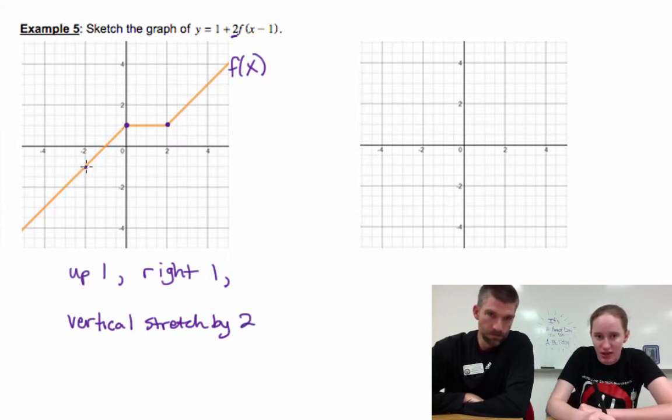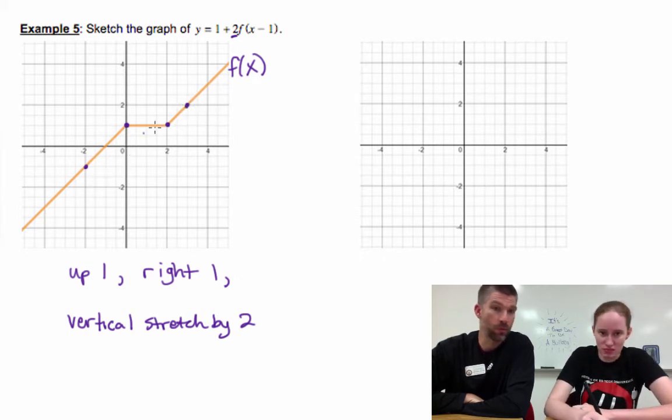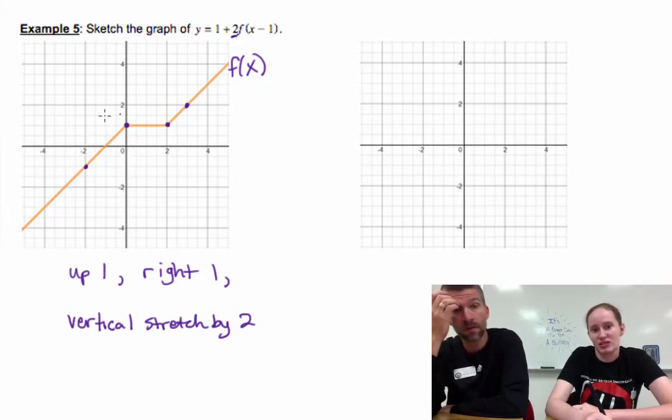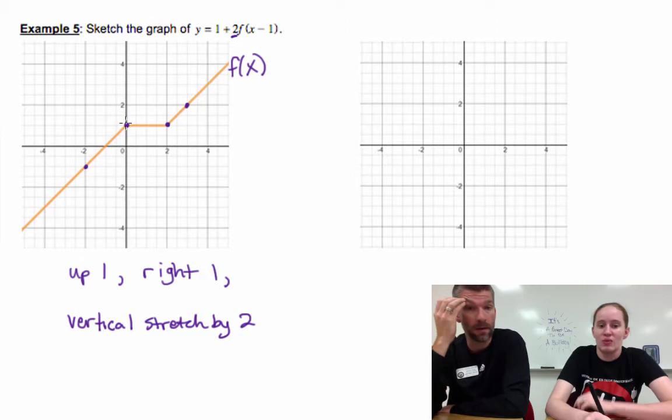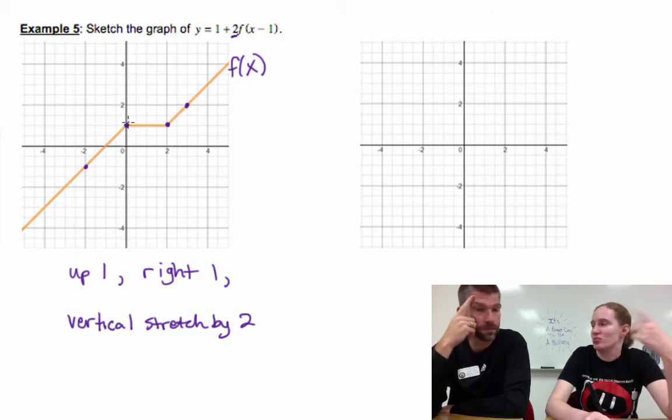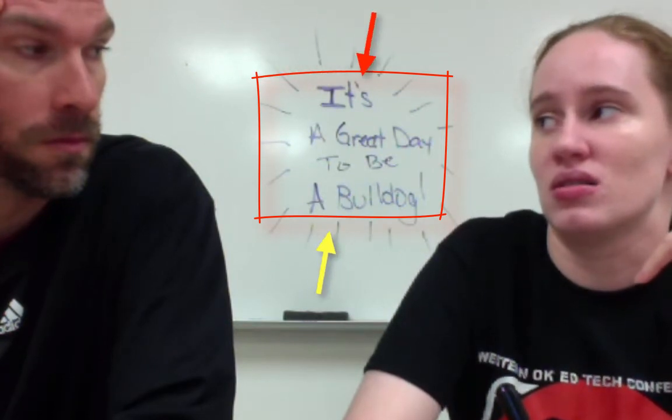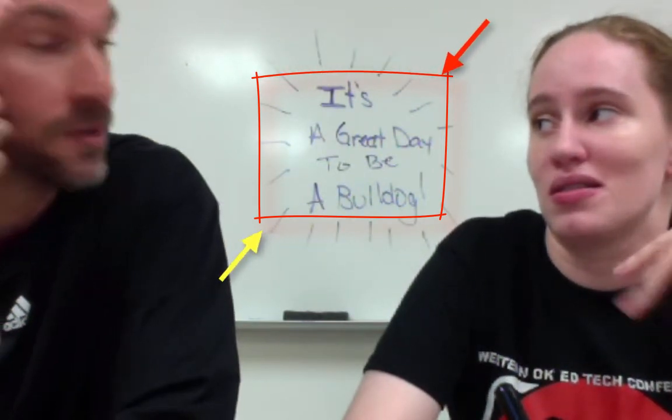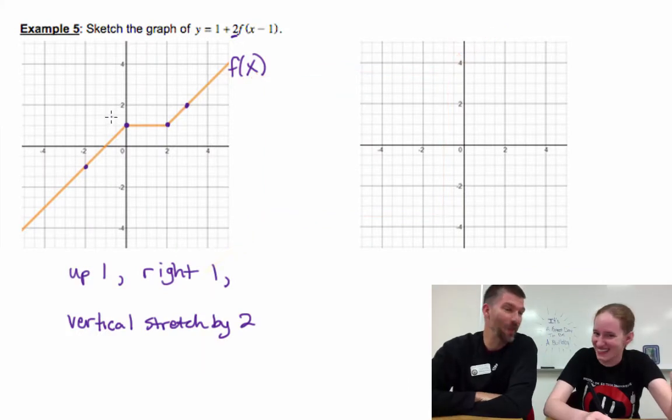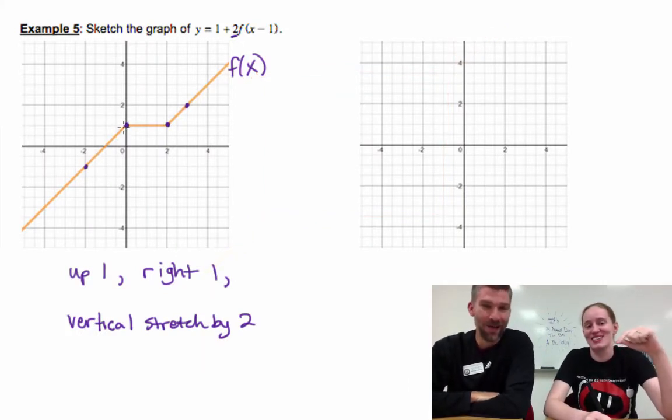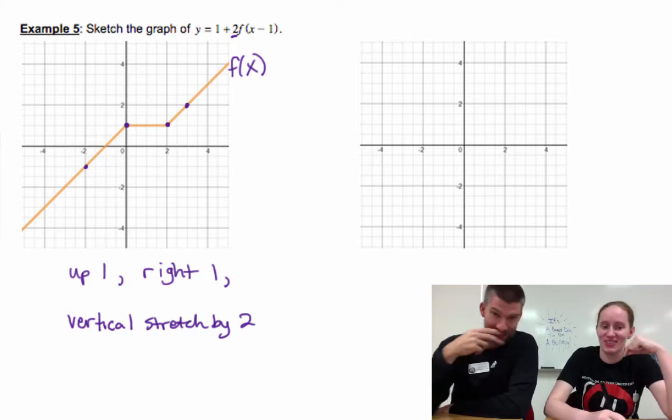Some points here that would be helpful to us, like actual points on the graph. This is zero comma one right here. We want to multiply our y value by two. That's a vertical stretch of two, so that gives us zero two, which brings this point up here.